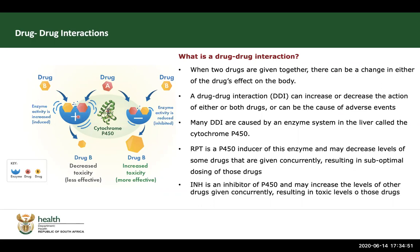Drug A is a liver enzyme inducer. That means its effect is to speed up the enzyme activity, which would then metabolize drug B very quickly. So if these two drugs are given together, drug A would induce this enzyme, facilitating and fast-tracking the metabolism of drug B, where we end up with minimal exposure to the drug or low drug levels. There might be decreased toxicity, but there will also be decreased efficacy of this specific drug.